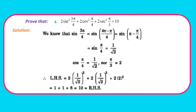Question 4: Prove that 2sin²(3π/4) + 2cos²(π/4) + 2sec²(π/3) = 10. sin(3π/4) = sin(π − π/4) = sin(π/4) = 1/√2. cos(π/4) = 1/√2 and sec(π/3) = 2. Substituting into LHS: 2·(1/√2)² + 2·(1/√2)² + 2·2² = 1 + 1 + 8 = 10, which is our RHS. Pause and note down the solution.